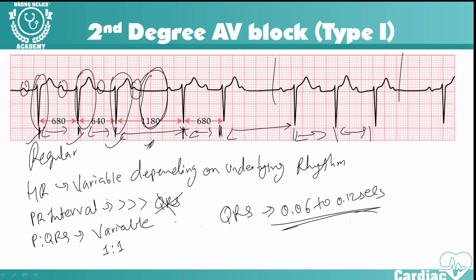This pattern is easy to identify — you'll see PR intervals increasing then a drop, repeating. You can also name the pattern by how many beats occur before the drop: if a QRS drops after two beats it's two-to-one, after three beats it's three-to-one. I hope you understand second-degree AV block type 1, also known as Wenckebach. If you have any questions, feel free to ask.